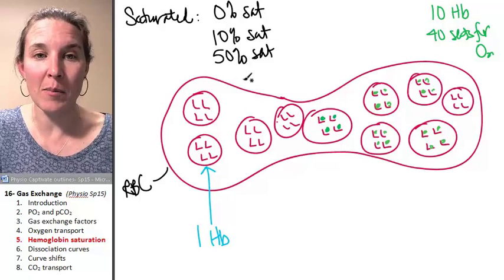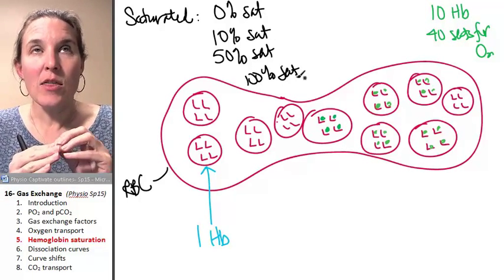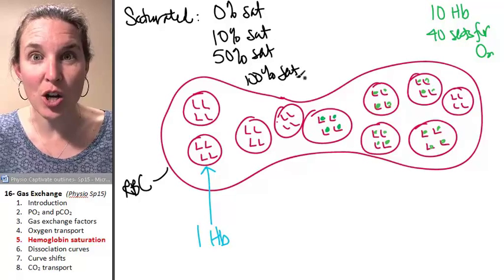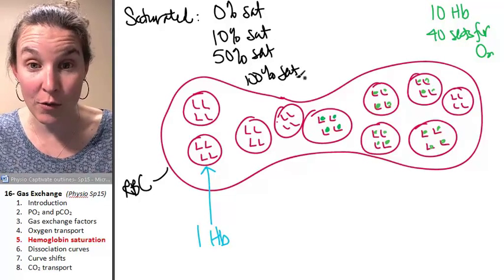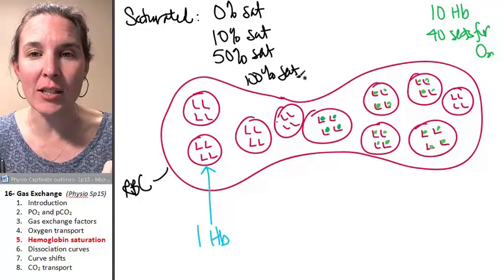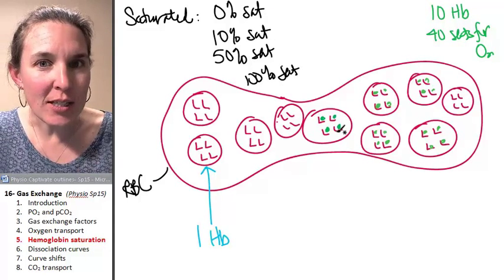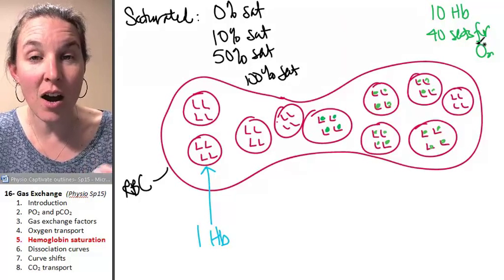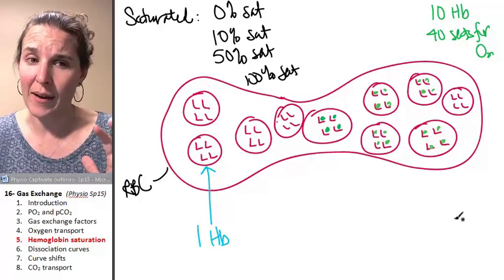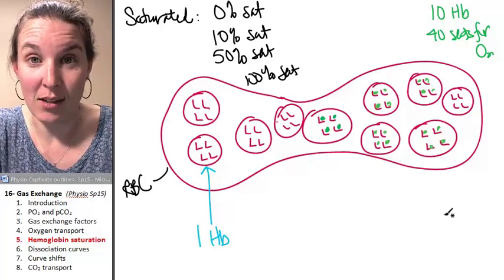And then if I filled them all up, I'm going to be 100 percent saturated. The percent saturation for hemoglobin is affected by the partial pressure of oxygen in the fluid surrounding it. And it's weird. The stickiness of the bus seat changes depending on the partial pressure of the oxygen in the plasma surrounding the bus seat. So that concept is what we're going to talk about next.